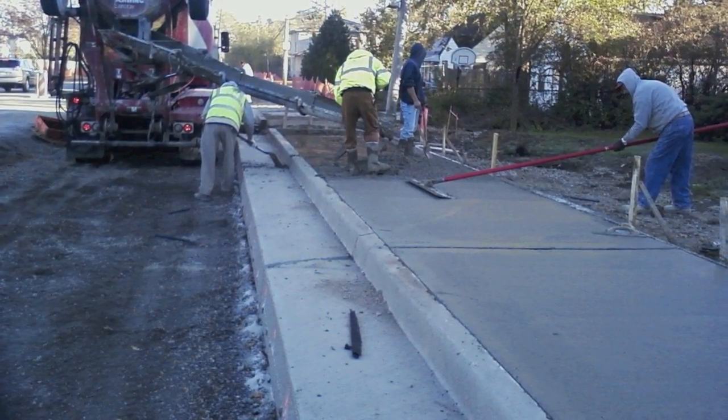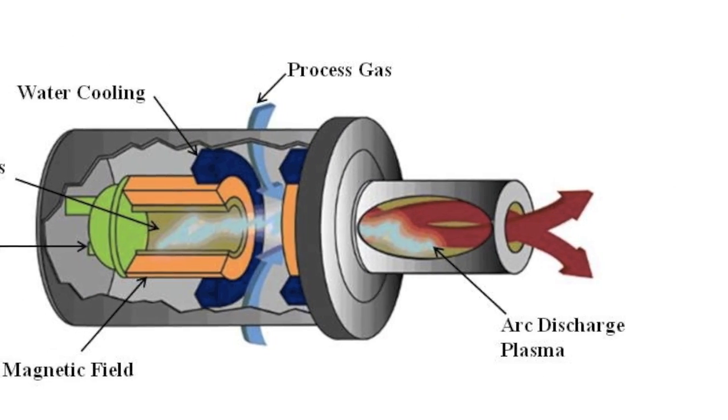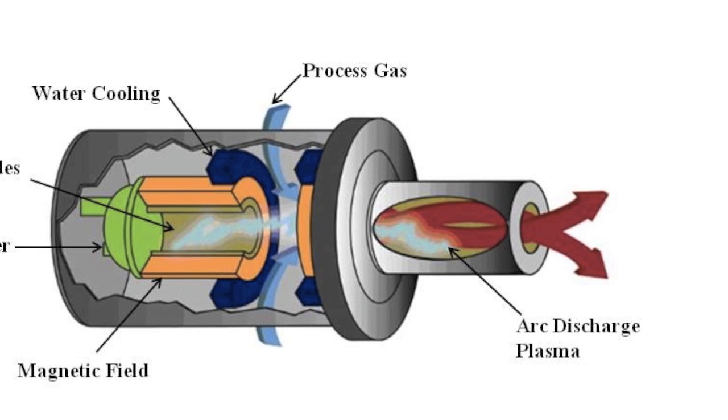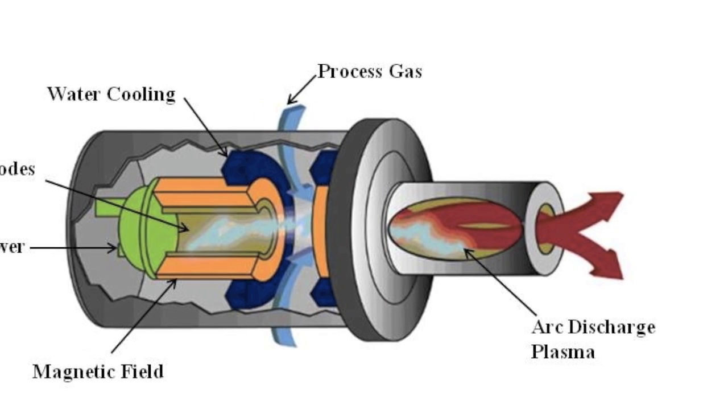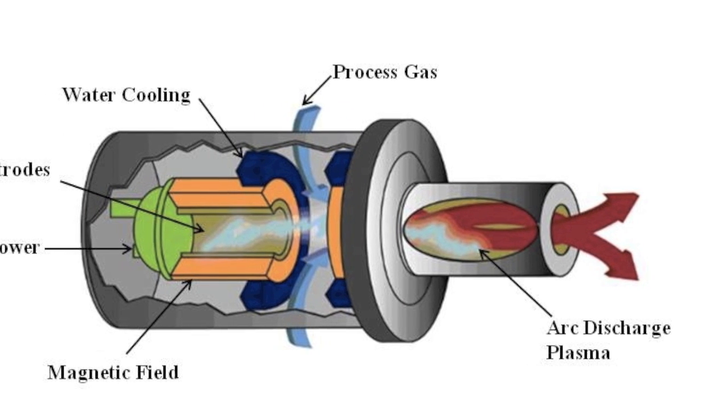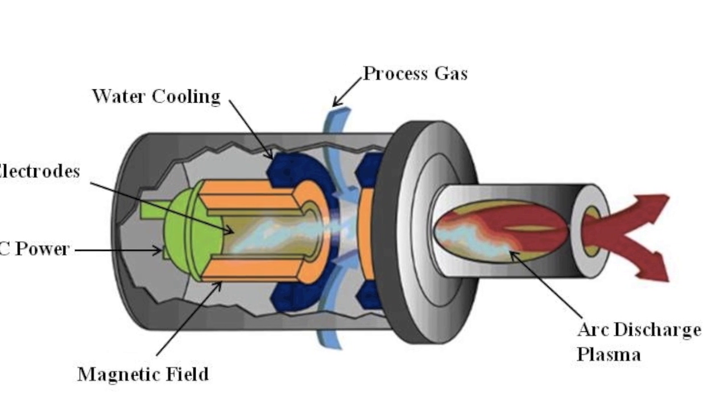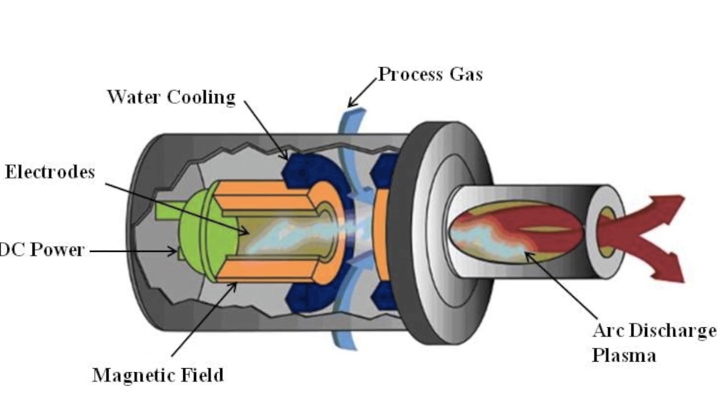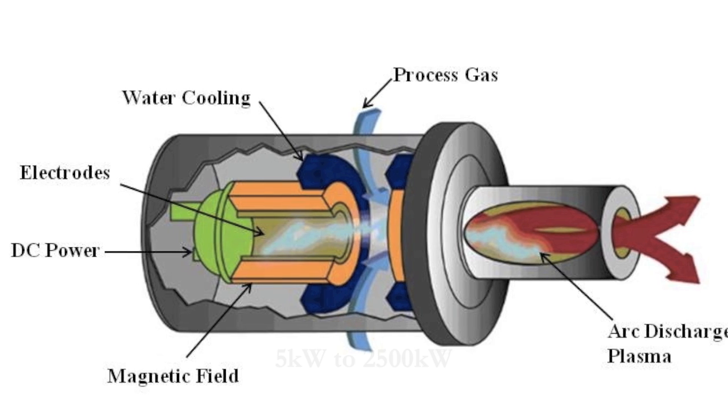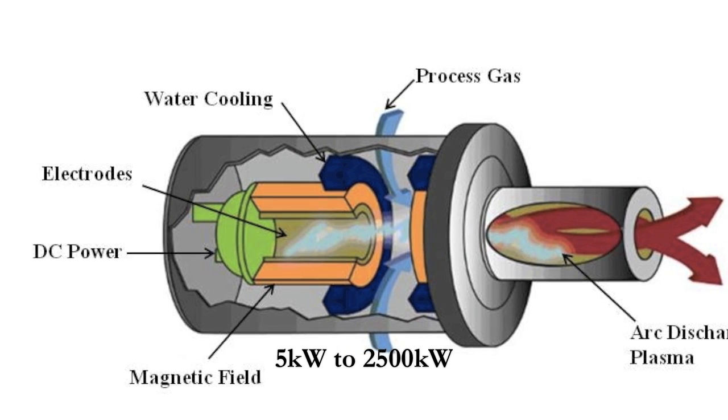Before going into details about the chemistry of the process, let's take a closer look at the plasma source. A DC plasma torch is typically used in the process of waste gasification. Around two to six plasma torches are usually present in the reactor to ensure homogeneous treatment of waste. Depending on the magnitude of application, the operating power could vary between 5 kW to 2500 kW.